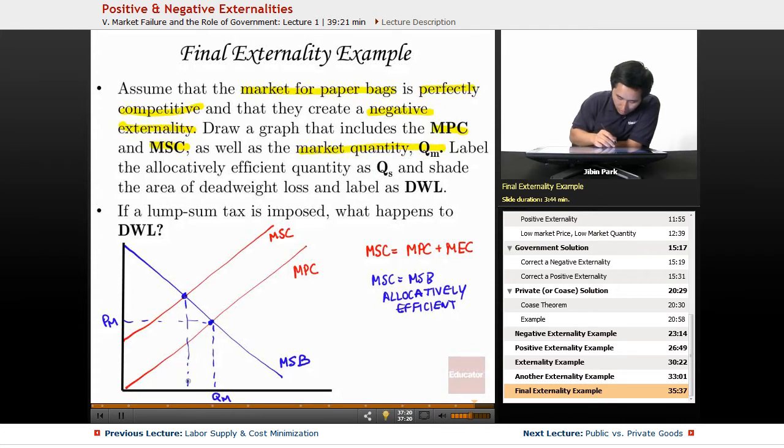So here is going to be Q star and here is going to be P star. Actually, allocatively efficient quantity is also going to be Q - I mean you can call it Q star here, but this problem wants you to call it Qs.